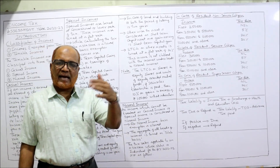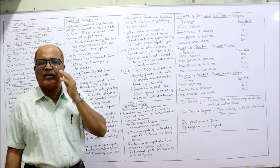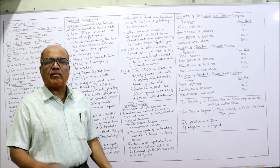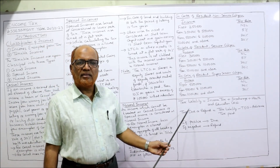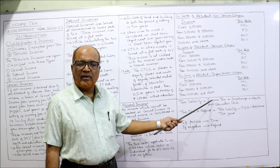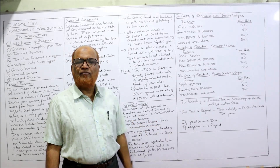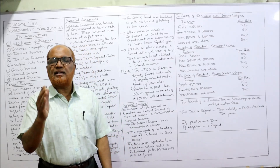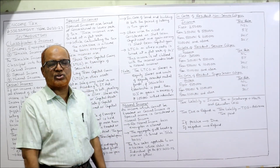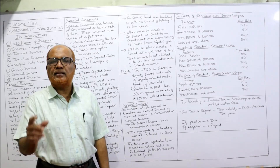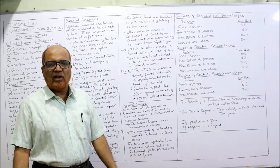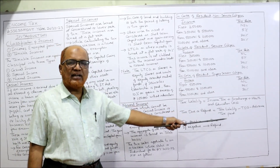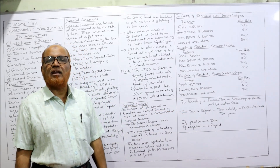To calculate tax due or refund: take the total tax liability and deduct TDS (tax deducted at source) and advance tax paid. If the result is positive, it is tax due. If negative, it is a tax refund from the income tax department.